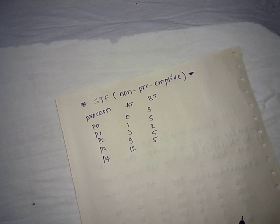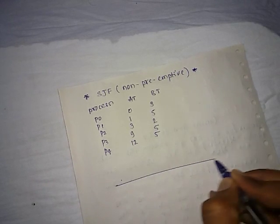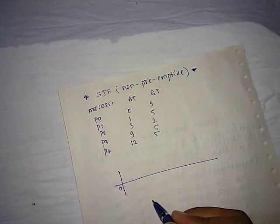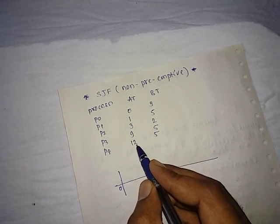We have to complete a process once it is allocated by the CPU. So try to find out the Gantt chart for this. The Gantt chart starts from zero, so check is there any process coming at time interval of zero.